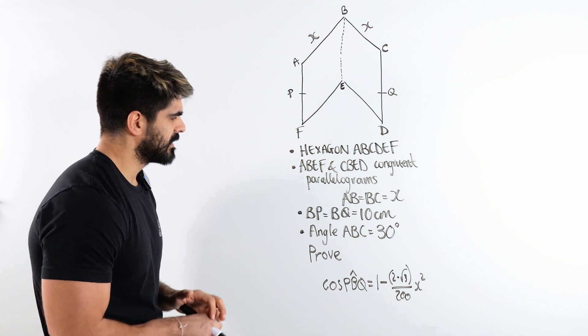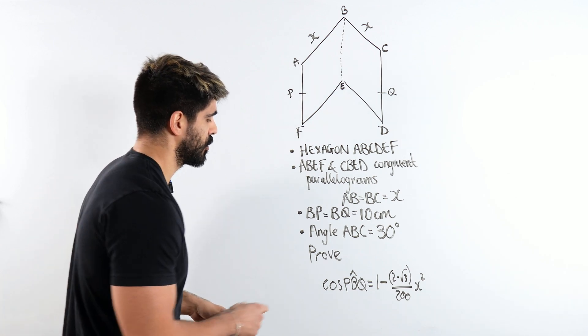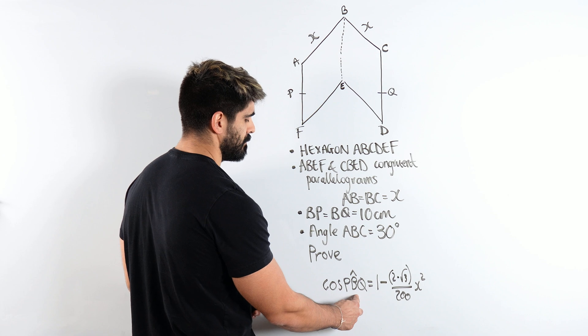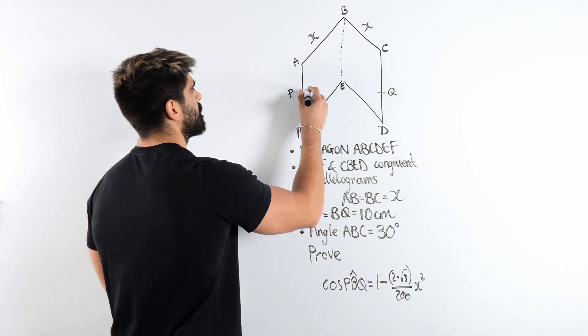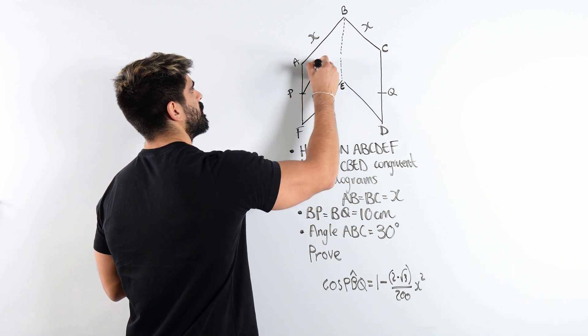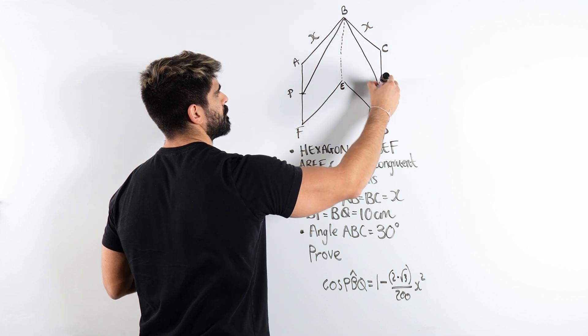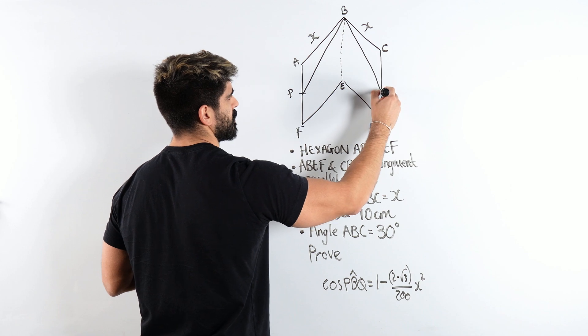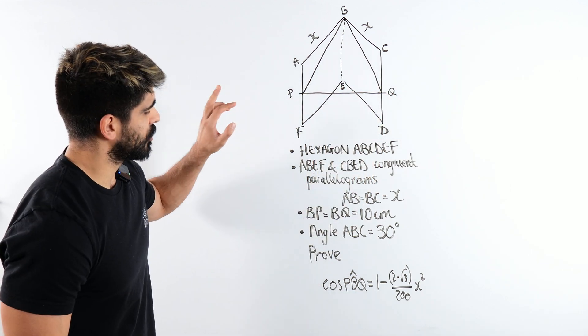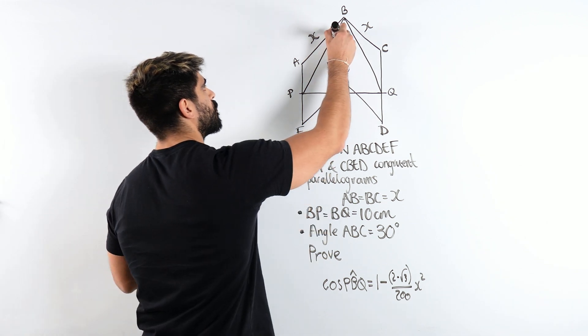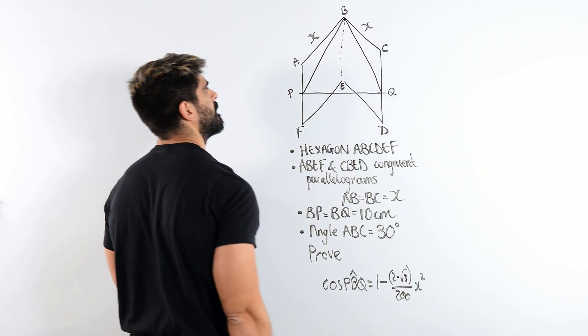Well, I think the first thing we need to do is identify what triangle they're even on about. Cos of PBQ - so they're talking about this triangle. They're saying cos of this angle, show it's this.